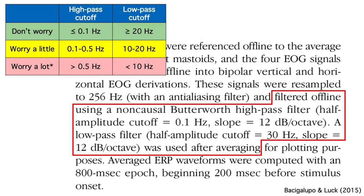When you're reading an ERP paper, one of the first things you should look at is the filter settings. If they're in the red range, the filters may have distorted the data so badly that the conclusions are invalid — not necessarily, but it's definitely something you'd want to be concerned about.